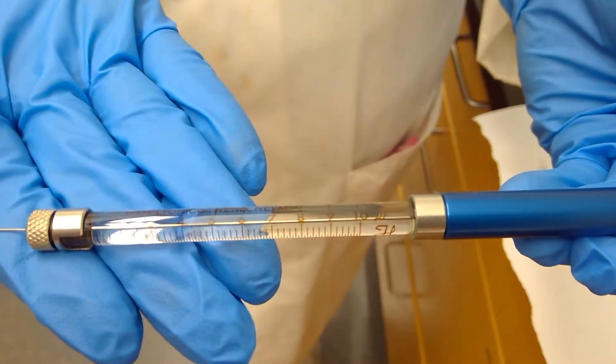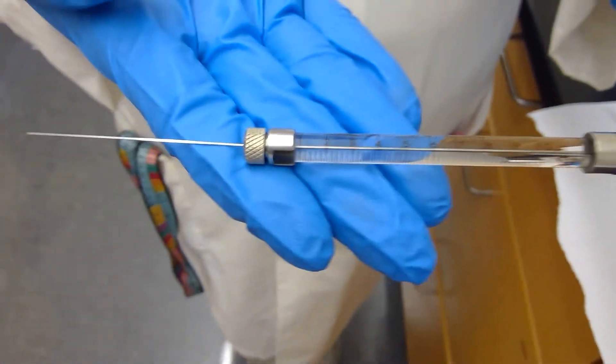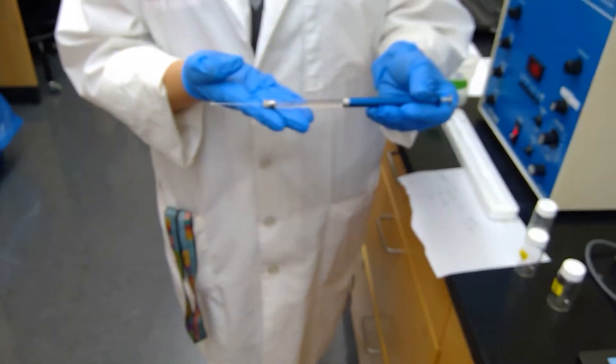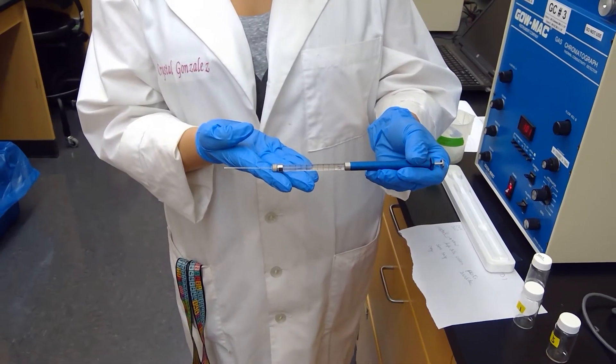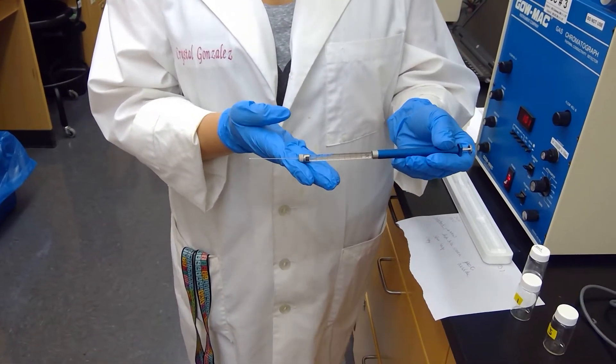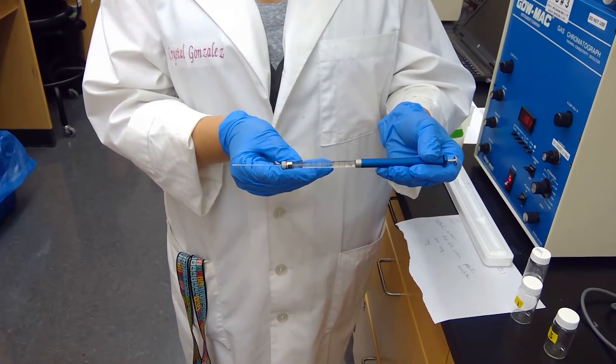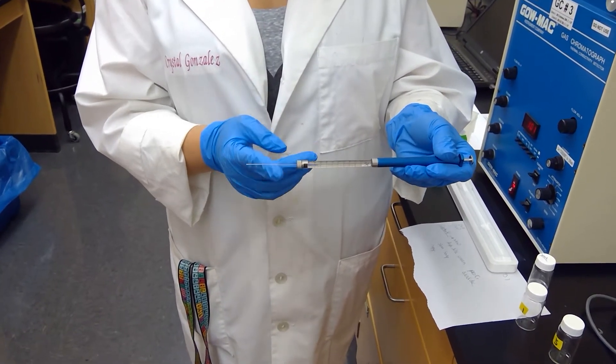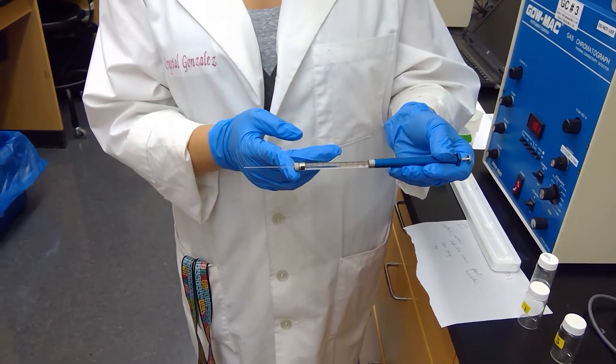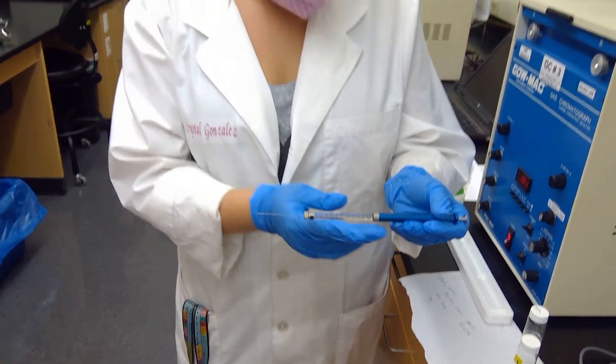So I'll go ahead and turn the scale towards you. And the reason why we're using this Hamilton syringe is because we want a very small volume for our gas chromatography machine. We're actually only going to inject about one or two microliters of sample and it has to be stainless steel metal here because our gas chromatography machine is actually quite hot.